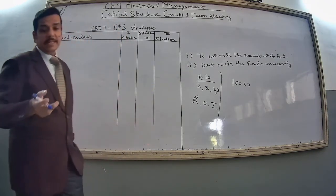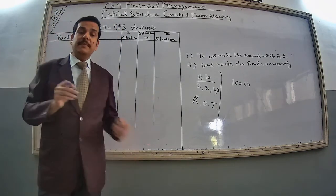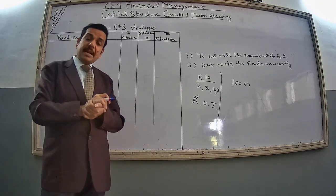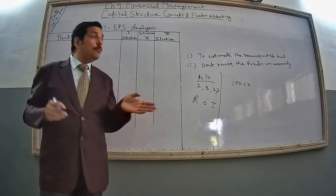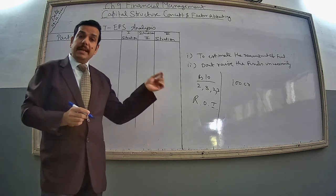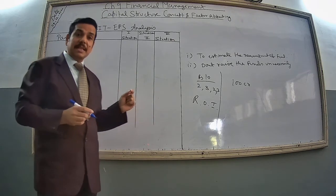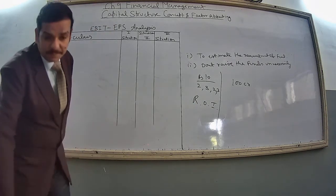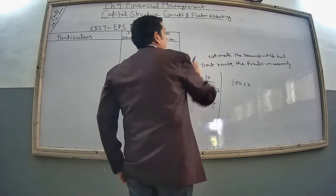This is the basic concept of financial planning. In financial planning we have estimated the fund requirement of the company and identified the sources from where we are going to arrange the money. But how much money is to be arranged from internal sources versus external sources — that we decide in capital structure. So now we are going to study capital structure.